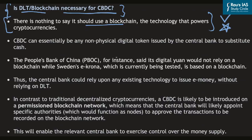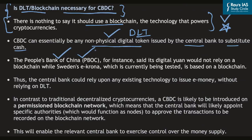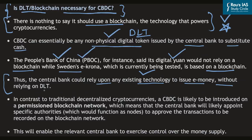Central bank digital currencies can essentially be any non-physical digital token issued by a central bank to substitute cash — not necessarily deploying blockchain or DLT. For example, China's People's Bank of China has stated that its digital yuan would not rely on blockchain technology. However, Sweden, also in an experimental phase, is deploying blockchain technology for its central bank digital currency. The conclusion is that a central bank could rely on any existing technology to issue e-money without relying on distributed ledger technology.